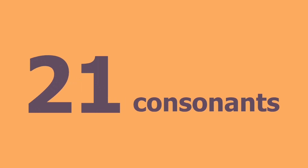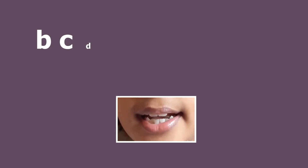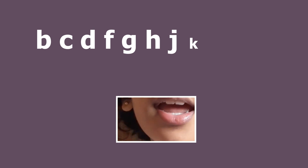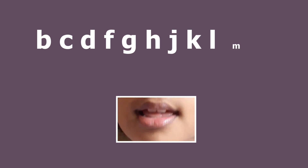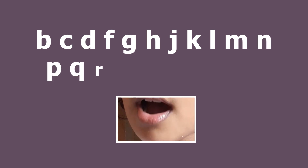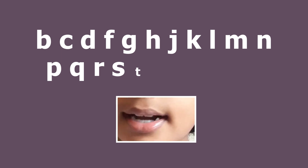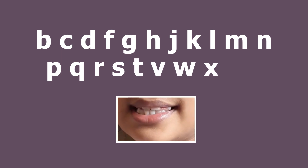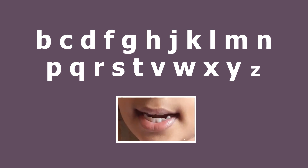There are 21 letters in consonants: B, C, D, F, G, H, J, K, L, M, N, P, Q, R, S, T, V, W, X, Y, Z.